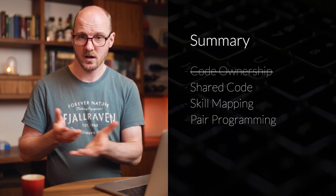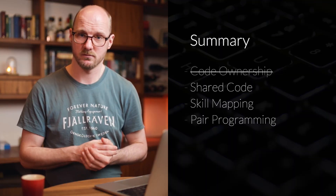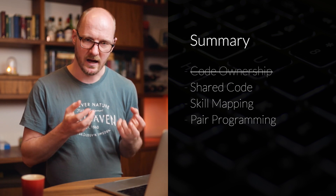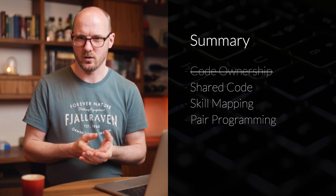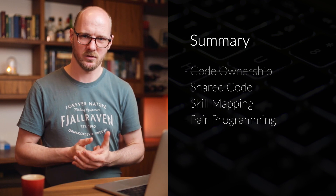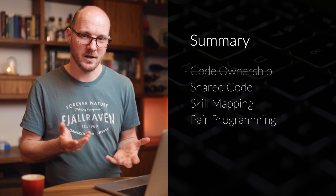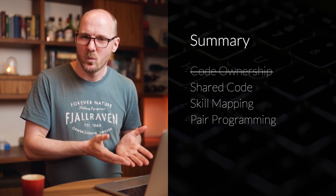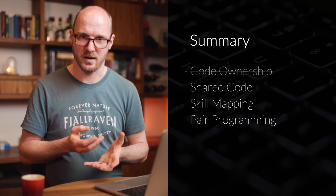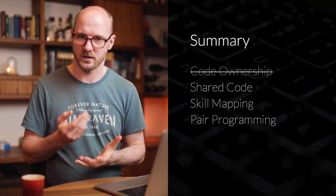To summarize: code ownership is bad, shared code ownership is good. It's a good idea to start identifying the gaps — where did code ownership accidentally sneak into your team? I've shown skill mapping as a way to identify those gaps, though there are other ways too. Whatever you do, set rules around pair programming and start pair programming to slowly start solving the problem. A few weeks or months from now, the problem will be gone. I hope this was helpful — if you have any thoughts or ideas for a future video, please let me know in the comments and subscribe. Thank you very much for watching.